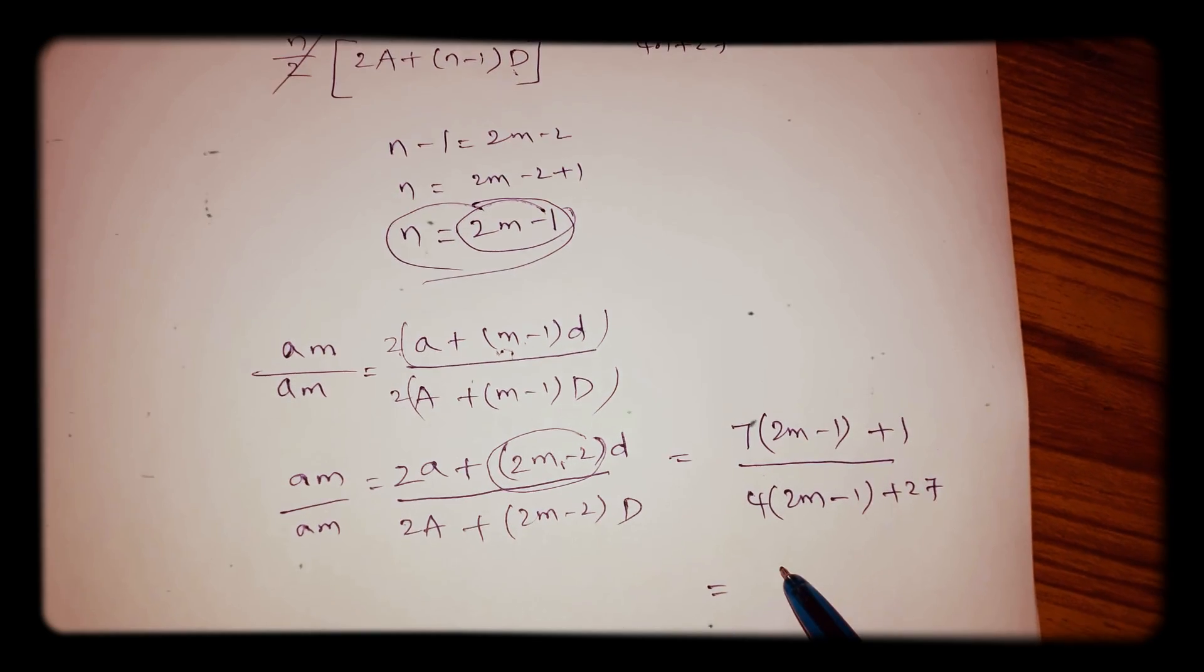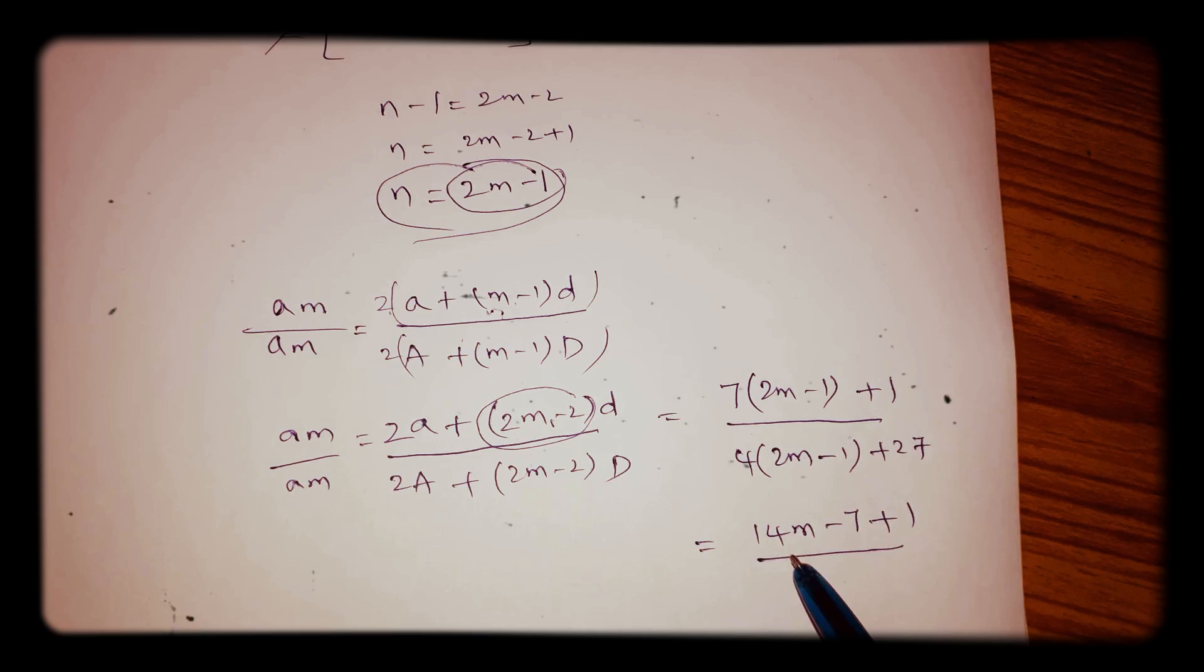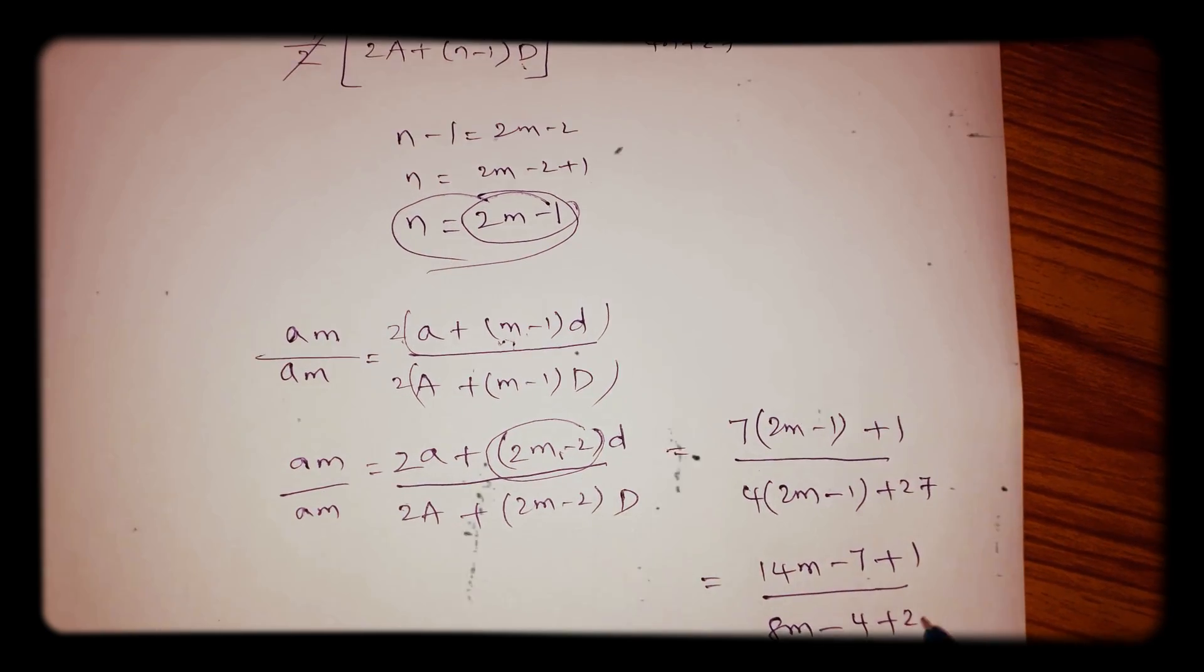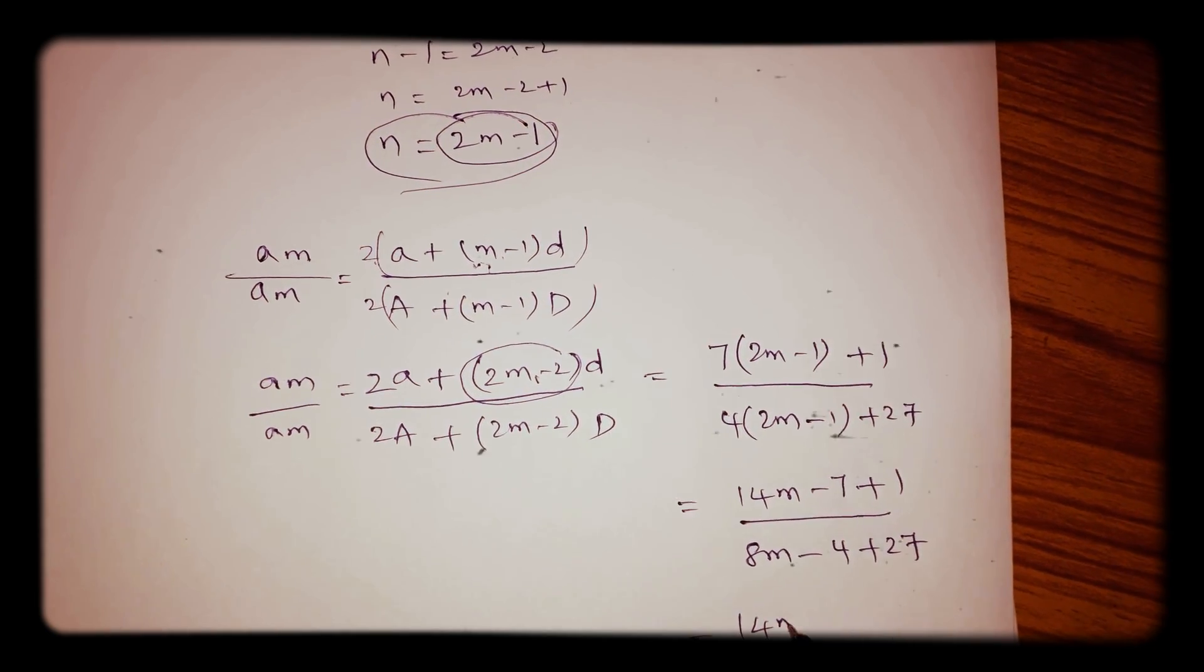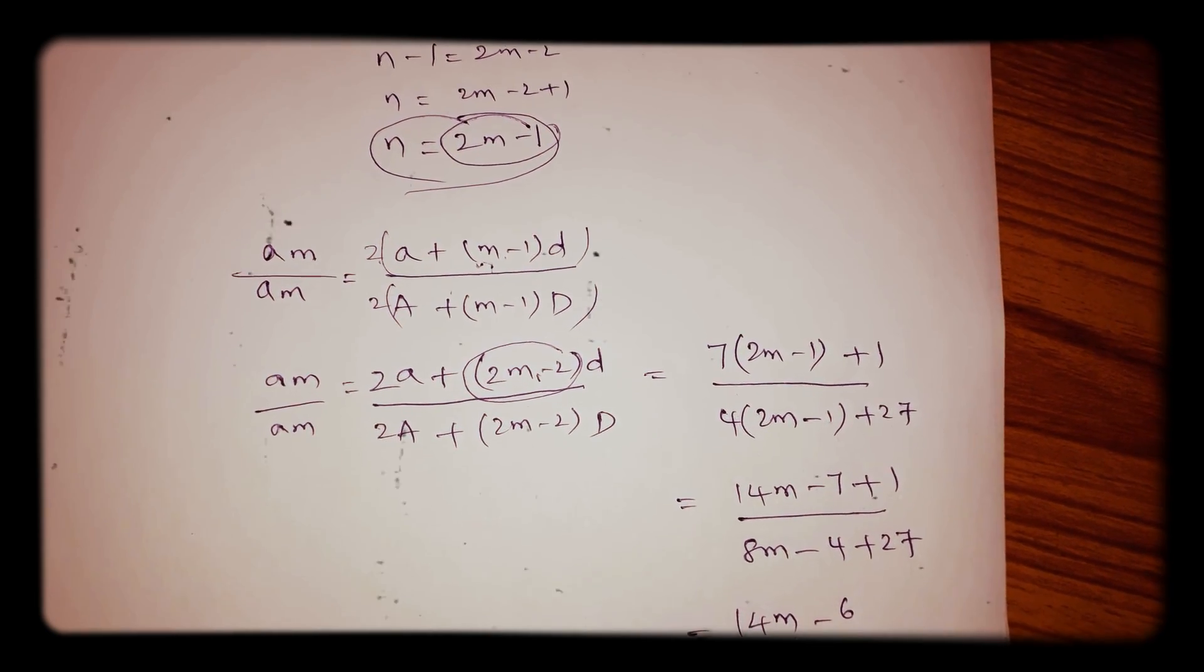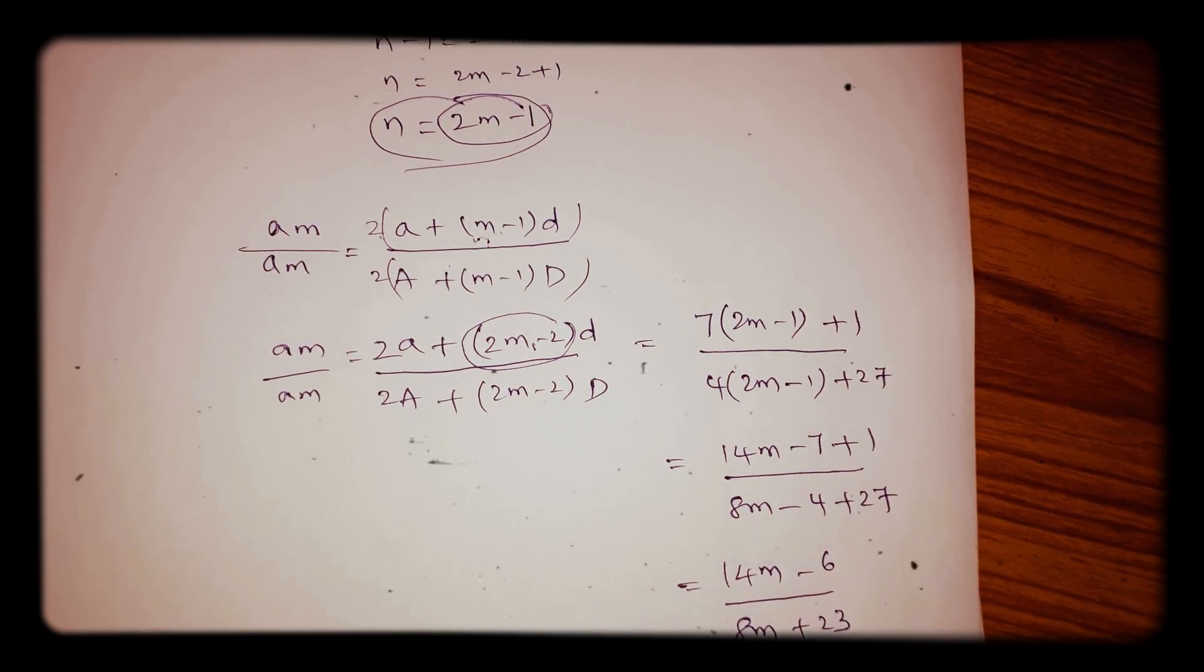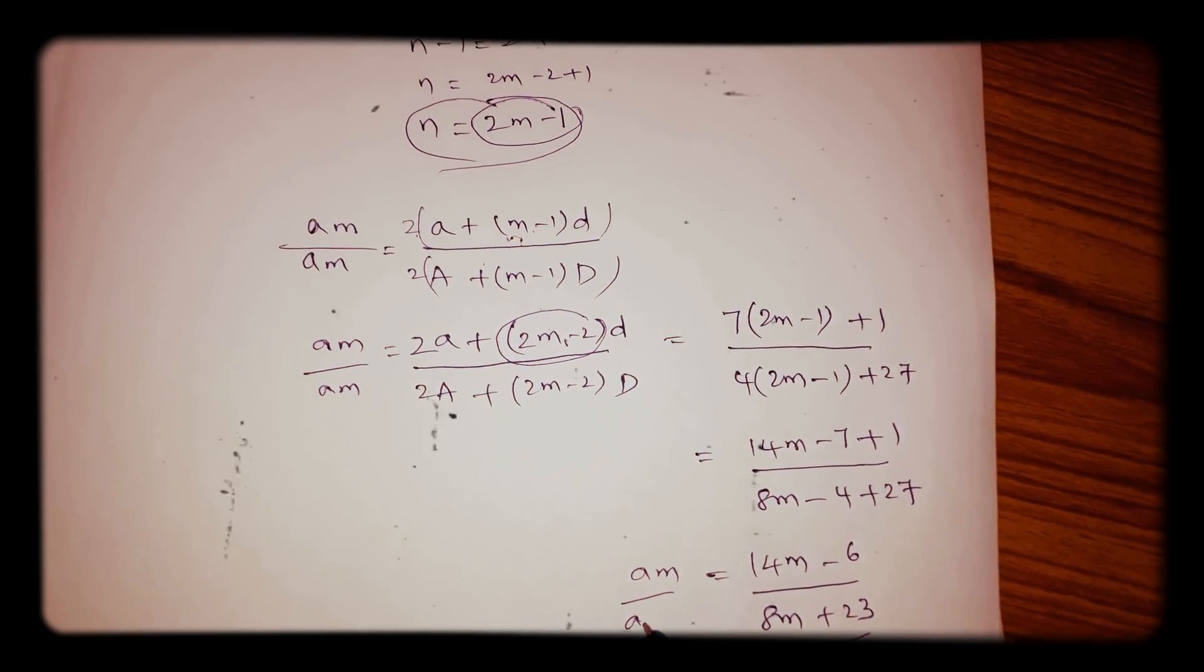So here 7 to 14m minus 7 plus 1, 8m minus 4 plus 27. So 14m minus 6 by 8m plus 23. This is the ratio of the mth terms.